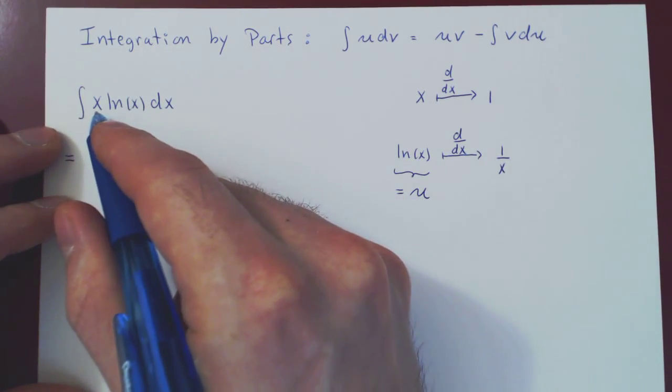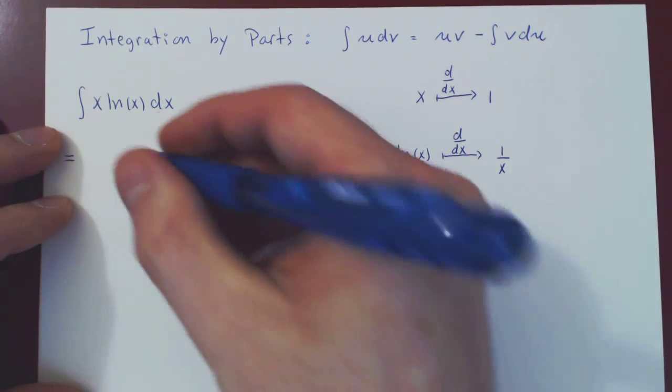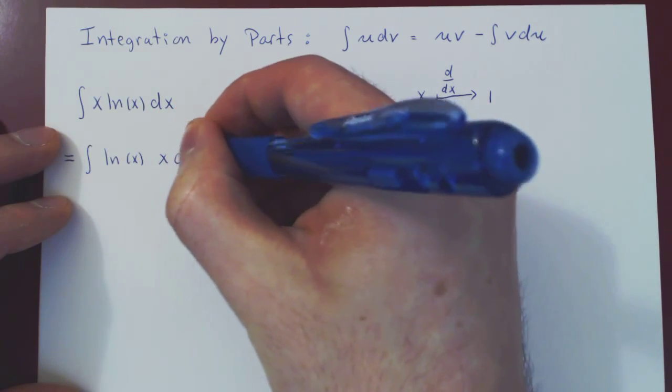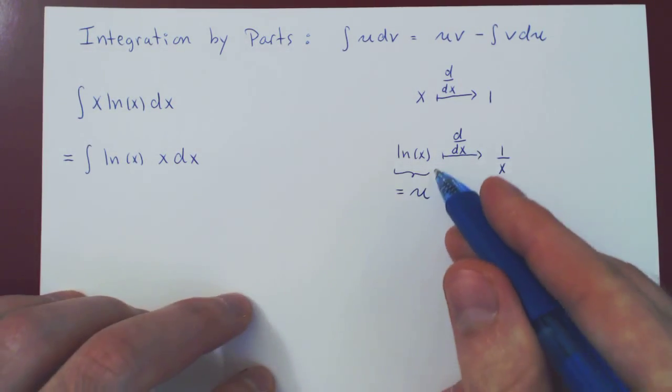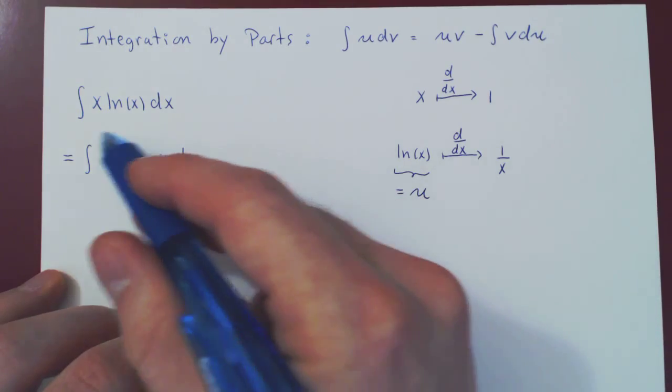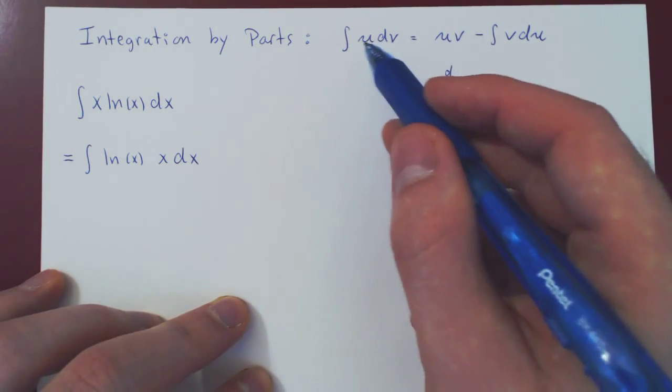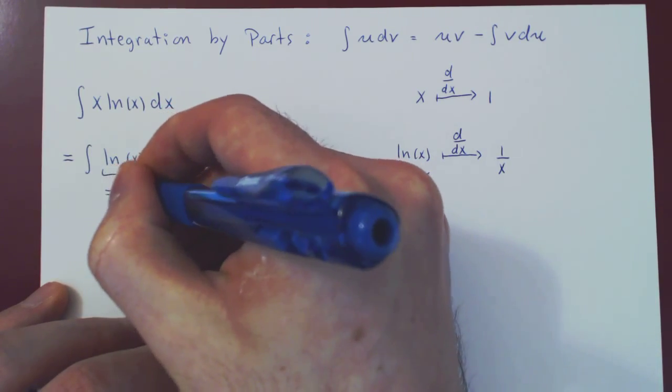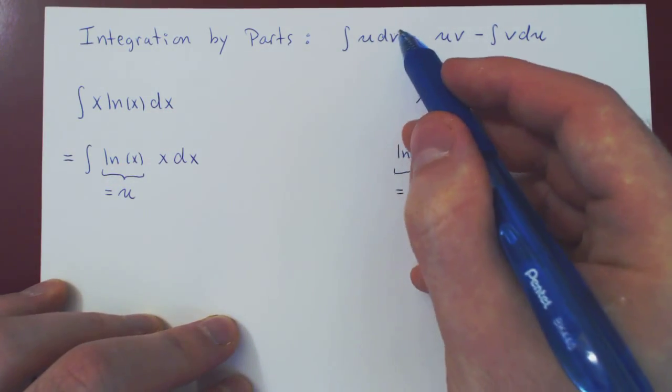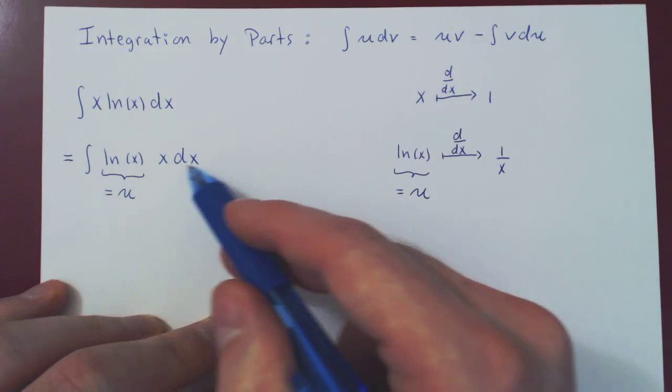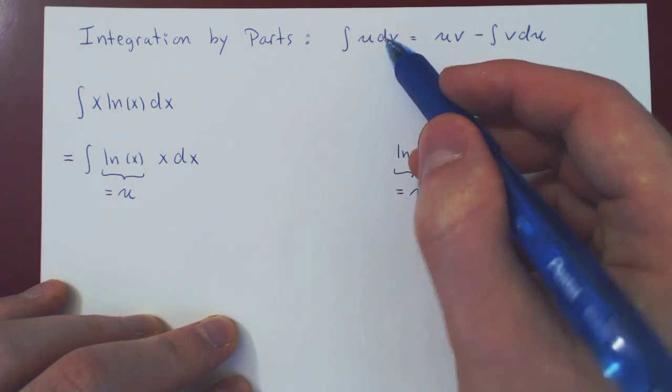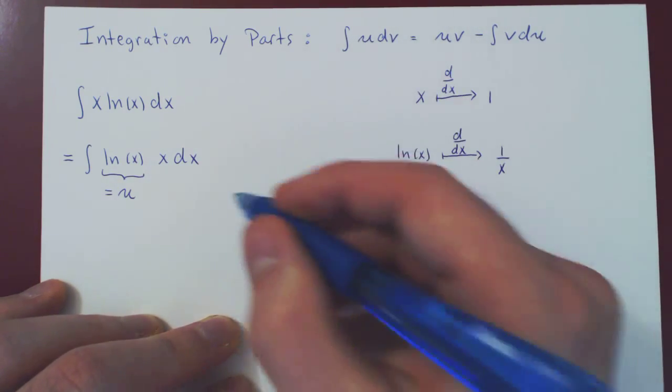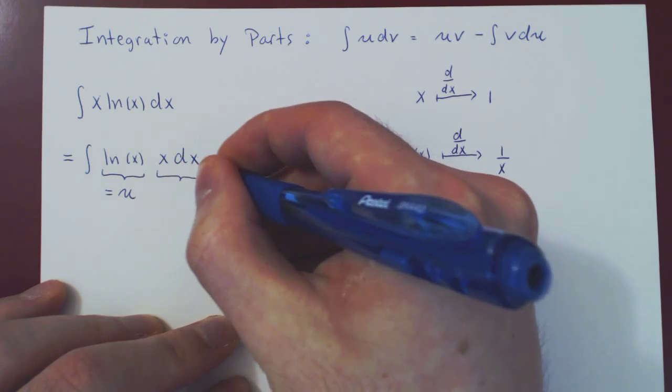Let me just rewrite x ln of x as ln of x times x. And once we choose our u, we want our integral to be of the form integral of u dv. So whatever we choose our u to be, in our case ln of x, we have no choice for the dv. We want the whole integral to be the integral of u dv. So whatever is our choice of u, everything else must be dv. So dv must be x dx.